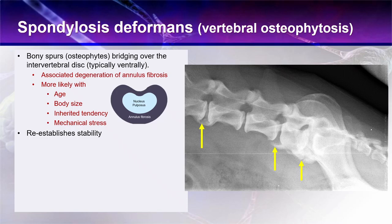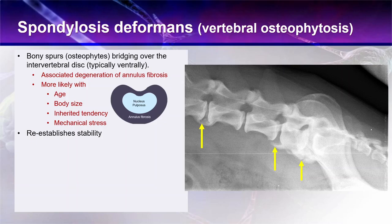Spondylosis deformans, or vertebral osteophytosis, is where you get these bony spurs or osteophytes that start to bridge over the intervertebral disc, and they typically are ventral, as indicated by the yellow arrows. They're associated with degeneration of the annulus fibrosus, so that degeneration will occur with age. It's more likely in larger dogs. There is an inherited tendency — you'll see it in some breeds more than others; for example, you're much more likely to see it in German Shepherd Dogs and much less likely to see it in Standard Poodles. It's also related to mechanical stress.